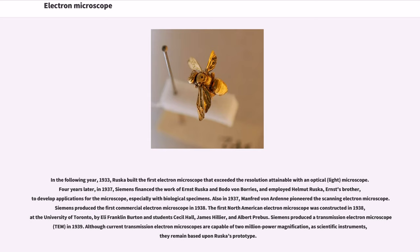in 1932, Siemens Schuckertwerke built the first electron microscope that exceeded the resolution attainable with an optical light microscope. Four years later, in 1937, Siemens financed the work of Ernst Ruska and Bodo von Borries, and employed Helmut Ruska, Ernst's brother, to develop applications for the microscope, especially with biological specimens.